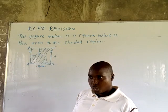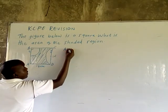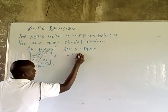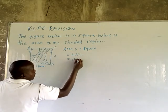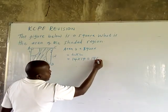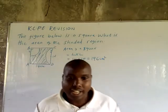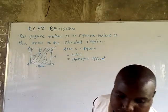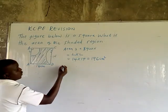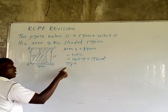The area of the square equals length times length: 14 times 14, that's 196 square centimeters. From there, we calculate the area of the circle, which is pi r squared.